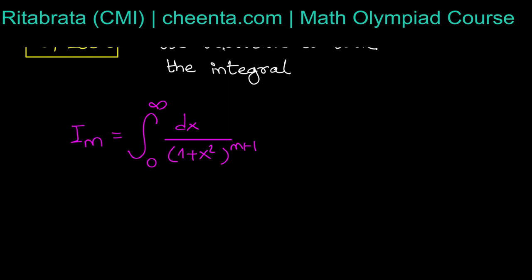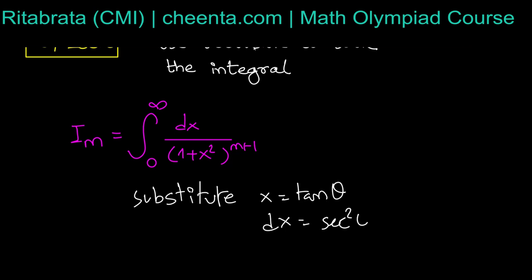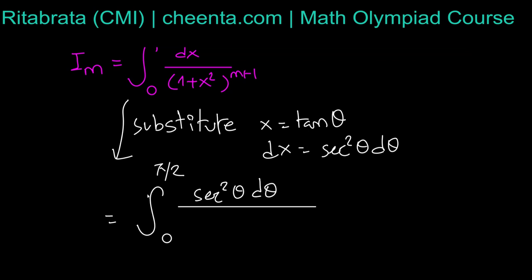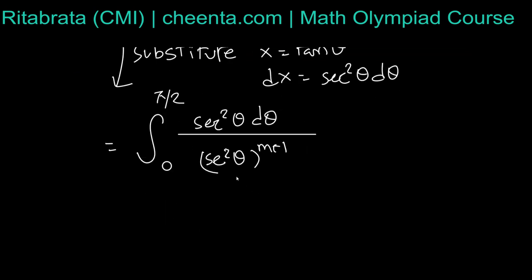For that we will use integration by parts. First, let's do a substitution to make it look simpler. Substitute x = tan θ, because 1+x² really resembles the identity for tan θ. Then dx = sec² θ dθ. The integral becomes the integral from 0 to π/2 of sec² θ dθ divided by (1 + tan² θ)^(m+1), which equals sec² θ · (1/sec² θ)^m.